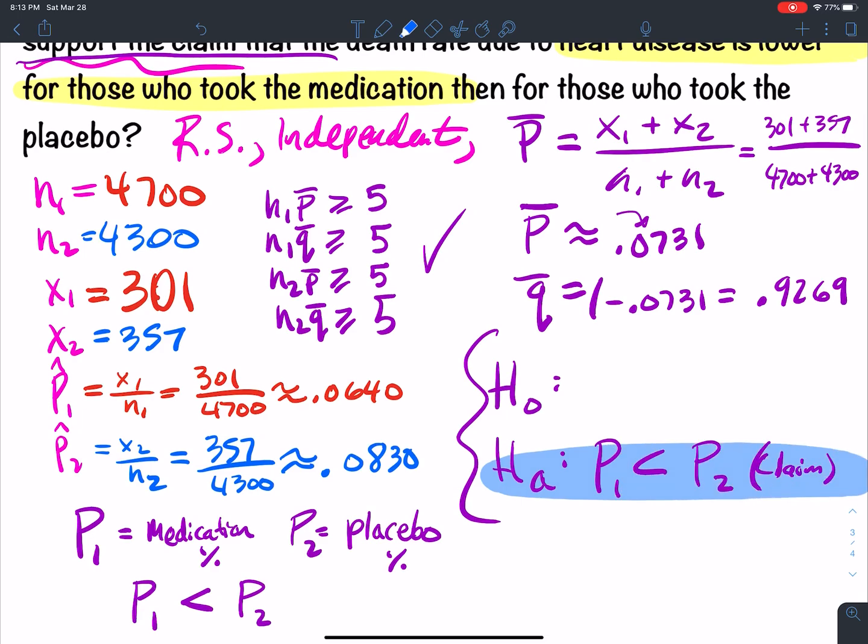Now, what type of test is it? It's a left-tail test. And so the opposite of this is P1 greater than or equal to P2.